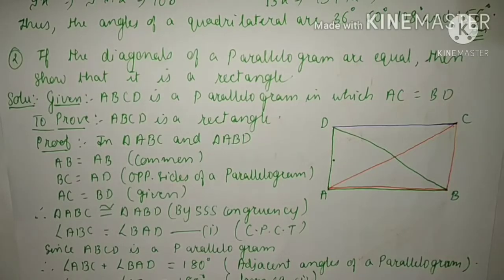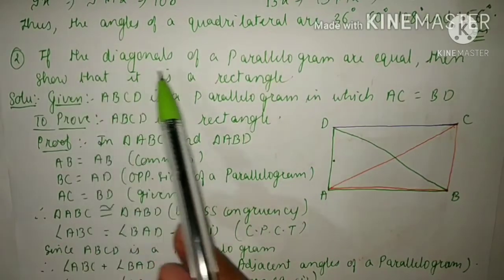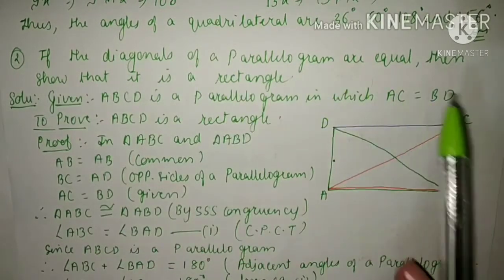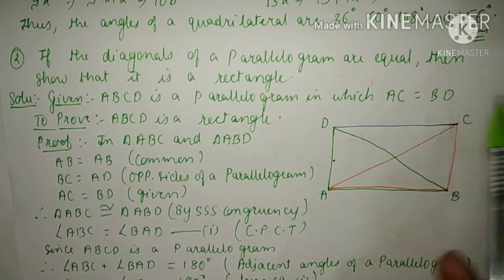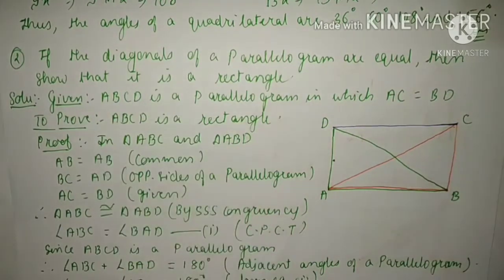Today we will start our second question. If the diagonals of a parallelogram are equal, then show that it is a rectangle.